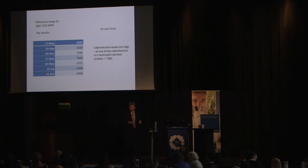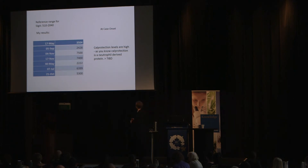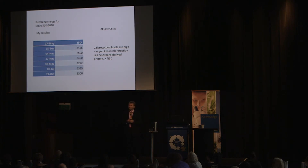He also measured his calprotectin levels, which were raised — a neutrophil-derived protein consistent with patients who have IBD. However, he's been scoped and tested. He does not, to all criteria, have an inflammatory bowel disease, but he's pumping out an inflammatory protein. What does that continue to suggest? Dysbiosis. Something has disturbed that relationship similarly to what you might experience with someone with inflammatory bowel disease — a condition in which the relationship between normal commensal bacteria and the immune system has become dysfunctional — without the presence of pathology.